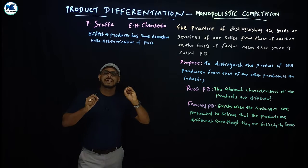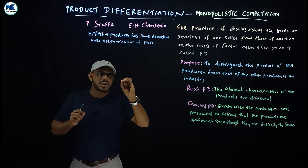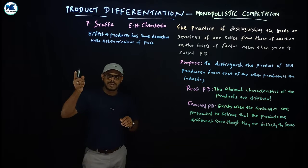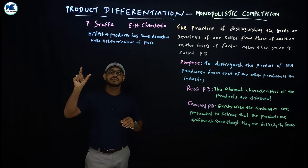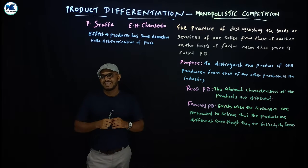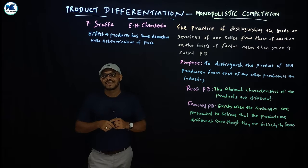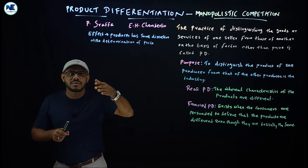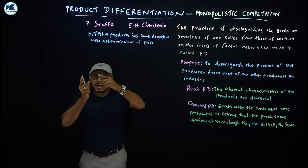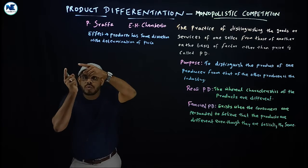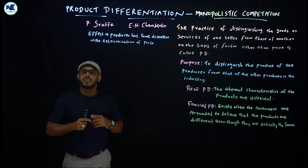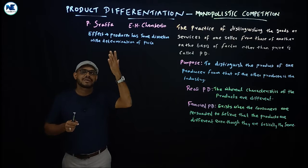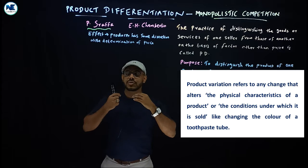Product differentiation is the special feature of monopolistic competition. In perfect competition, products are homogeneous. But in monopolistic competition, because of product differentiation, each firm faces a downward sloping demand curve.